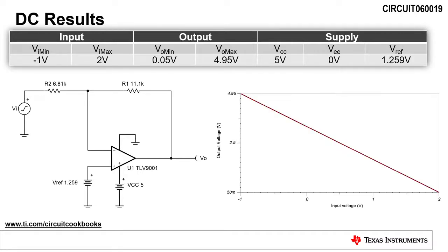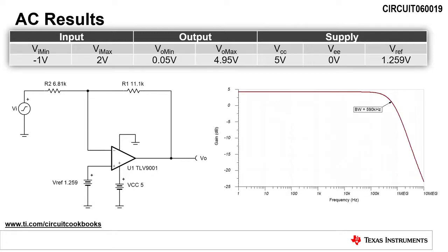A DC sweep of the input voltage from -1V to 2V yields an output voltage from 4.95V to 50mV. This verifies the functionality of the circuit. Running an AC sweep analysis, we find that the bandwidth of the circuit is 590kHz.